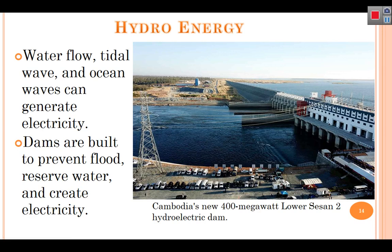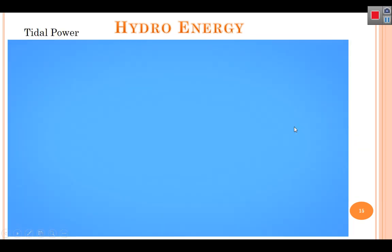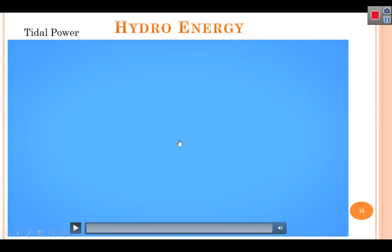About hydro energy: water flow, tidal waves, and ocean waves can generate electricity. This is a kind of dam built to generate electricity, called a hydroelectricity dam. This is Cambodia's new 400-megawatt lower station, just recently built.